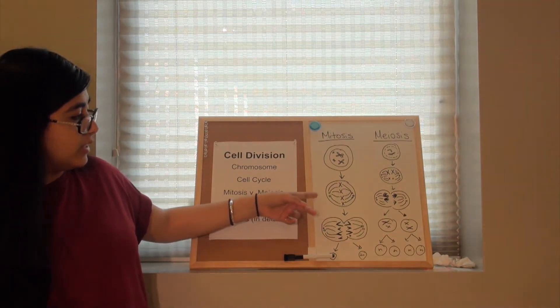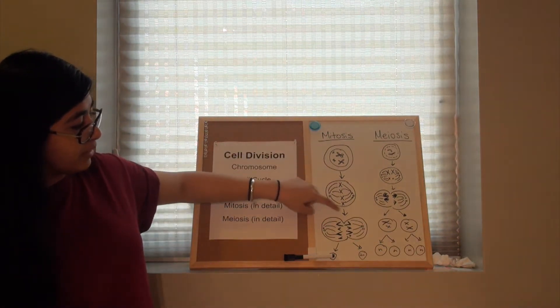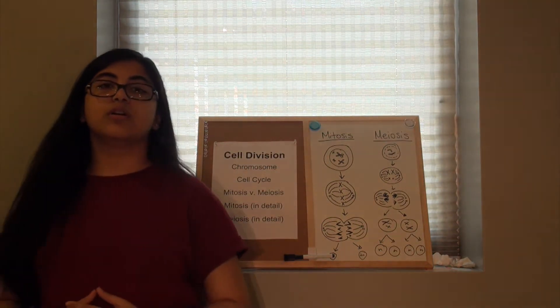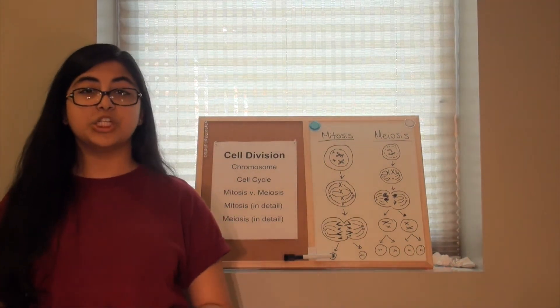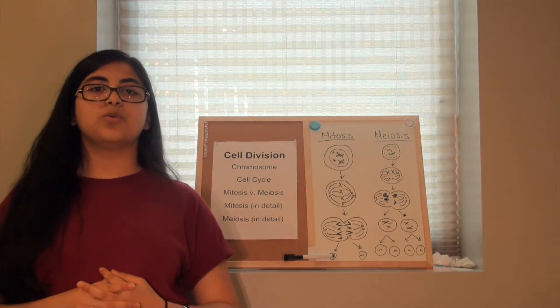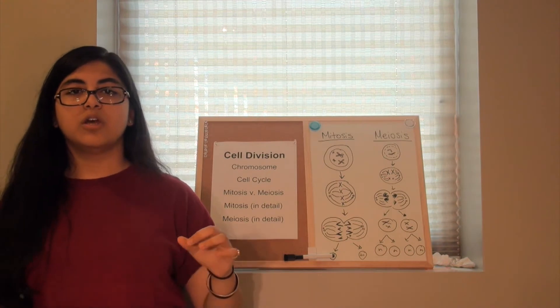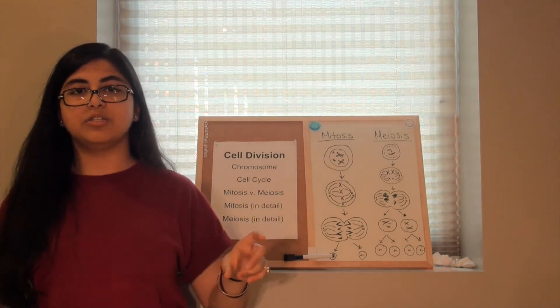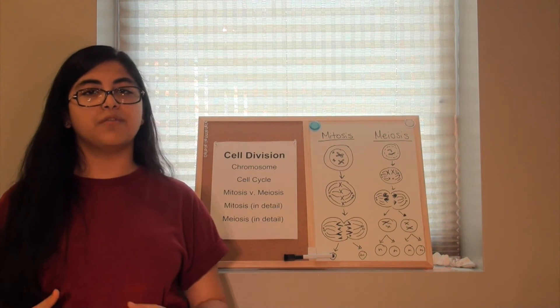Then we have metaphase in which all the chromosomes line up at the equator to get ready for the division itself and is also where the centrosomes are already at their opposite poles and start to release their spindle fibers.